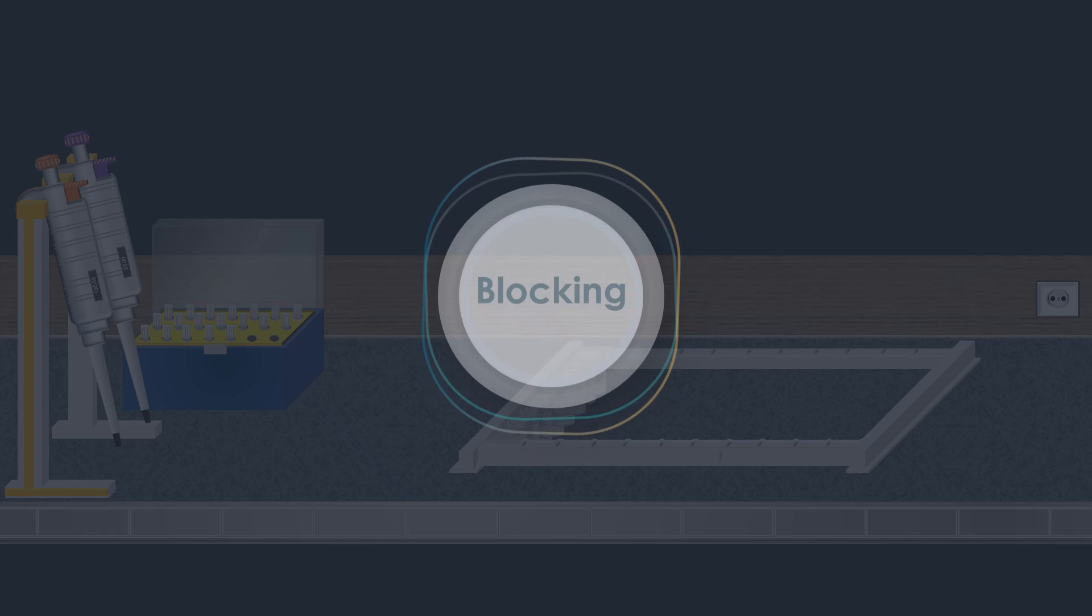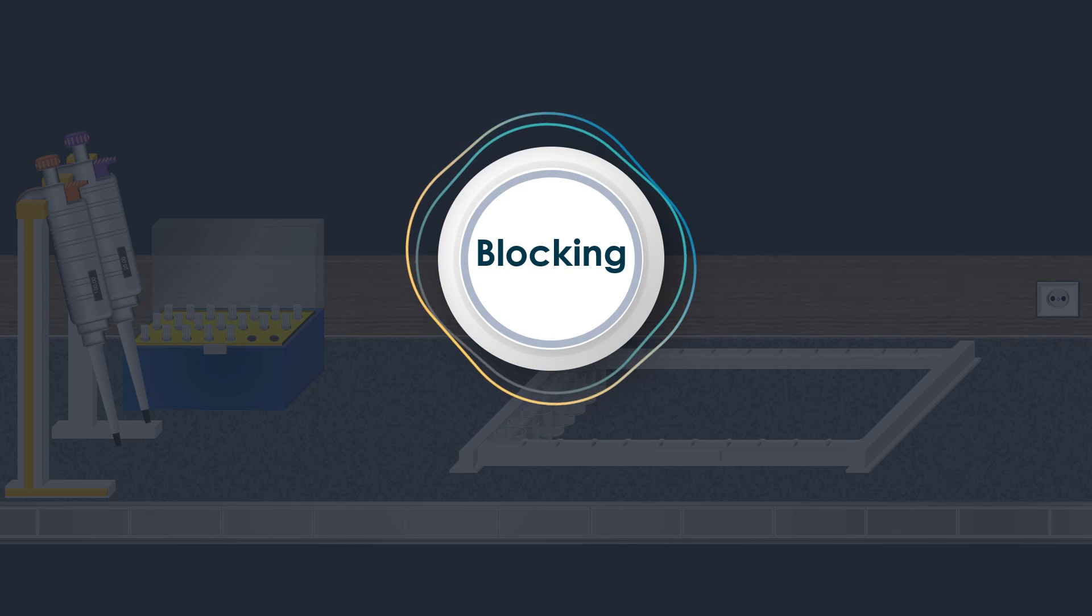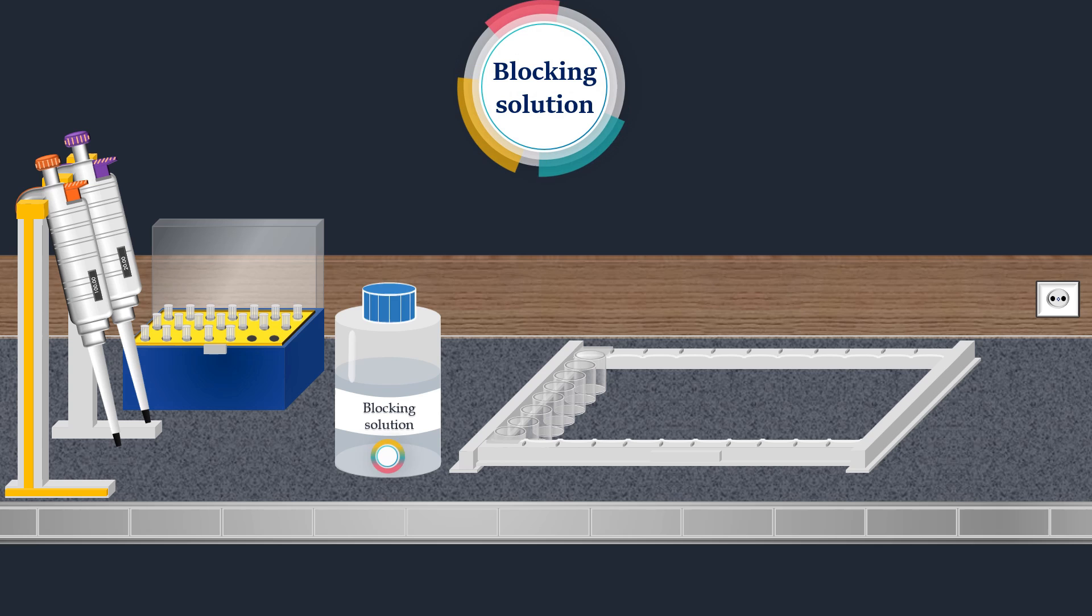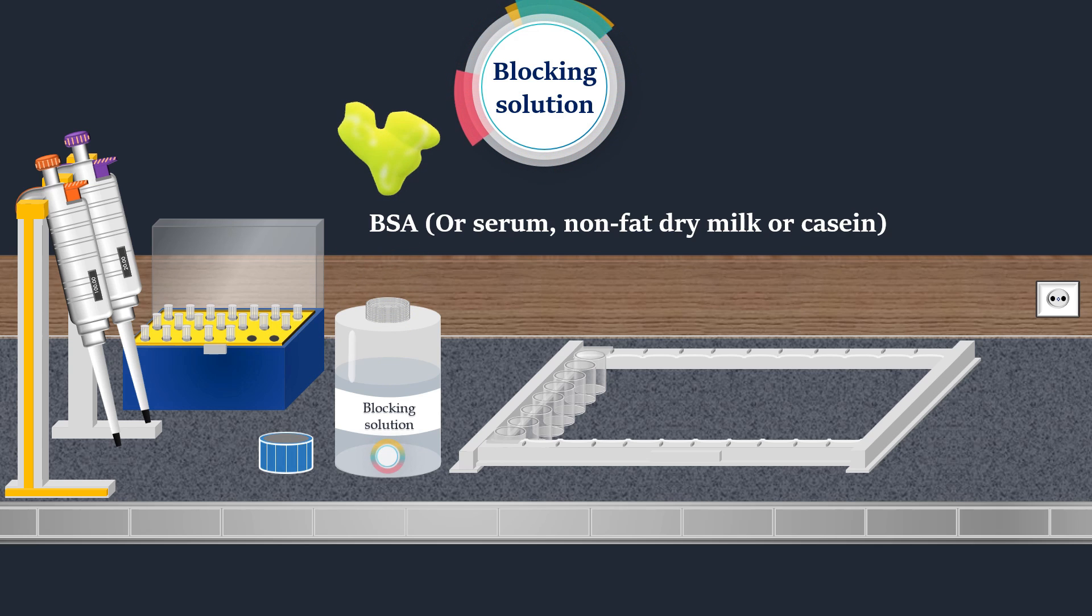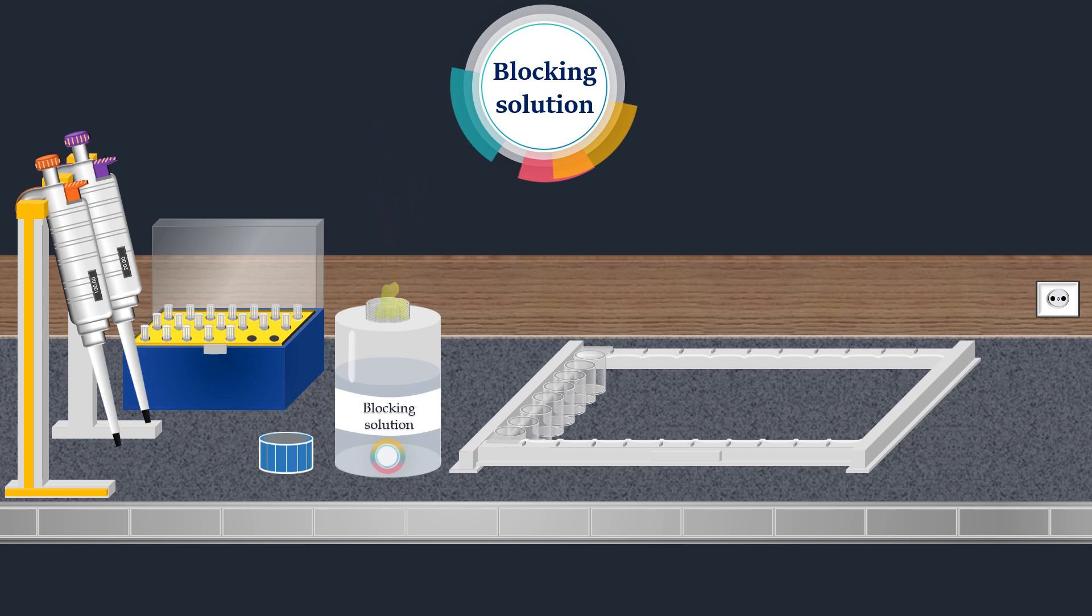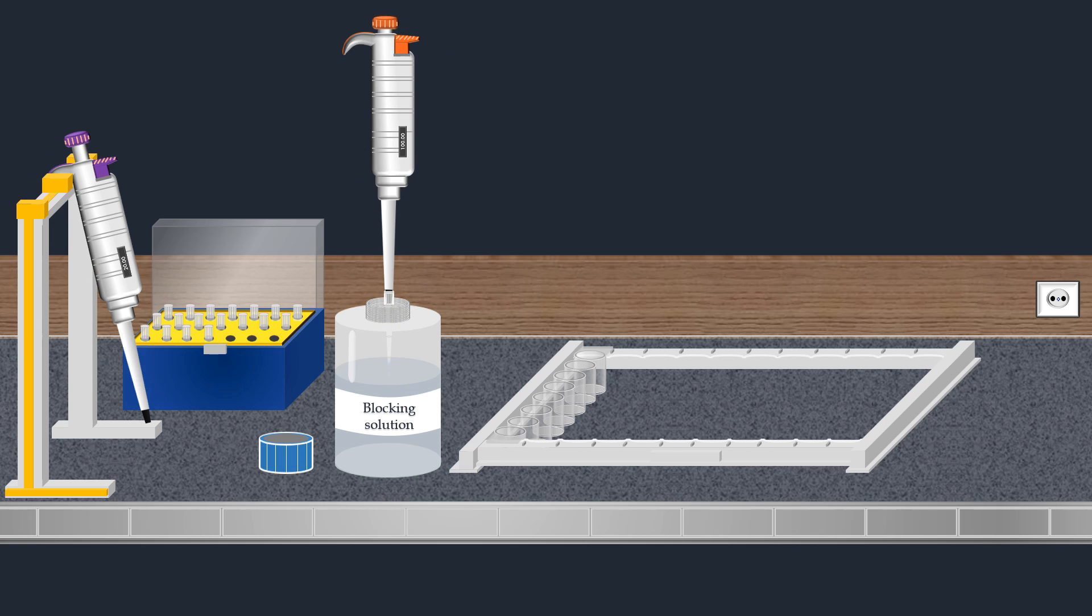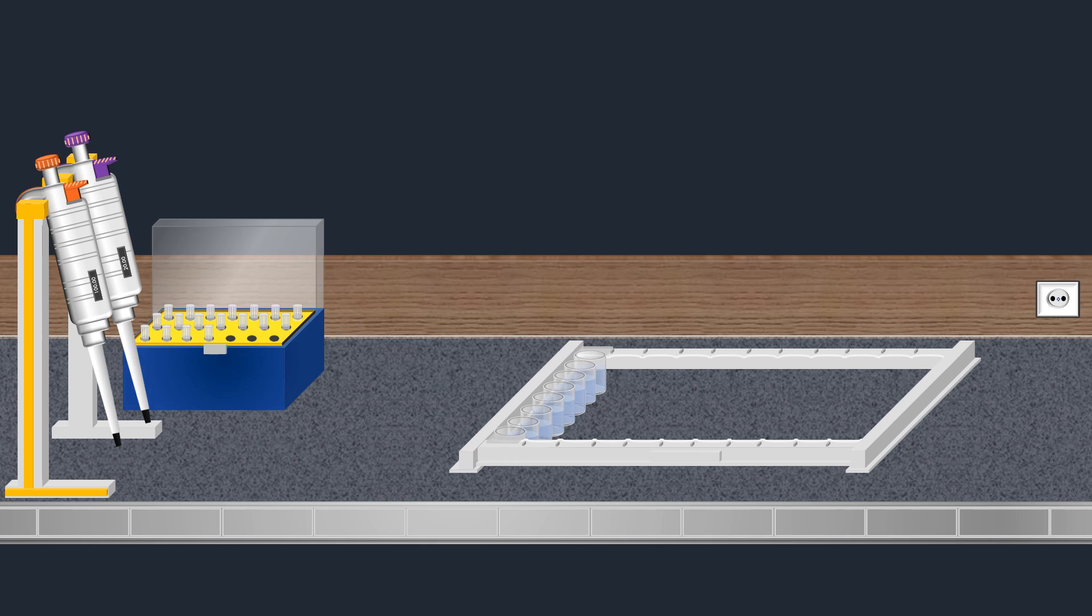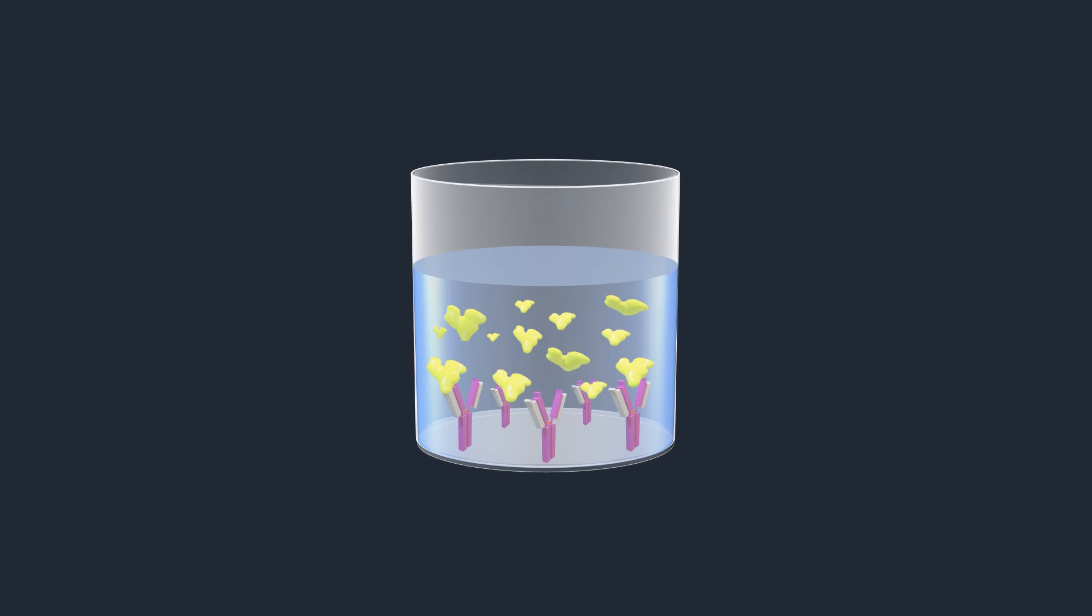The next step in sandwich ELISA is to block any unoccupied sites on the solid phase. During this step, a blocking solution is applied, usually containing proteins like BSA, serum, non-fat dry milk, or casein. The blocking solution is added to each well. Subsequently, the well strip is covered and incubated. The proteins in the blocking solution form a barrier on the plate, preventing substances from binding to these sites in subsequent steps.